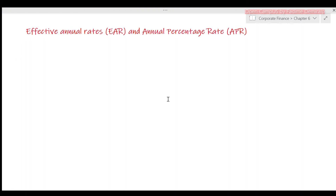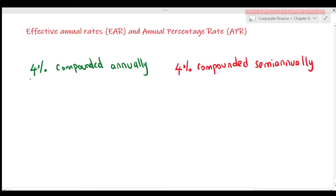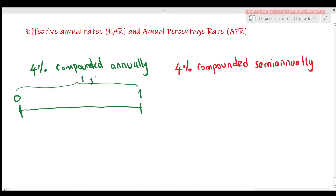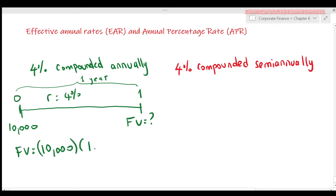Suppose you have $10,000 to invest at a bank, and you are told about two accounts: 4% compounded annually and 4% compounded semi-annually. In the first option, with one period of one year and a period rate of 4%, you invest $10,000. The future value is 10,000 times (1 + 0.04)^1, which equals $10,400.